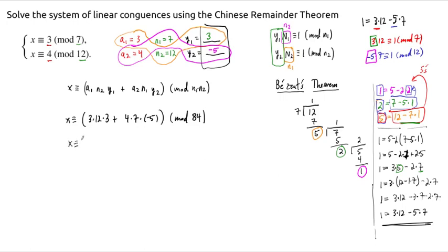And a little bit of math here. This becomes 9 times 12. So that's, I believe, 108. This is then going to be minus 35 times 4 is 140.